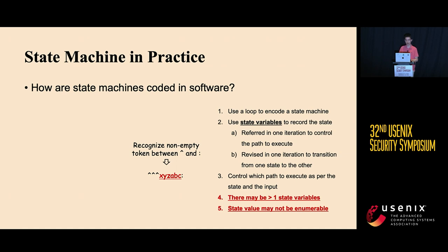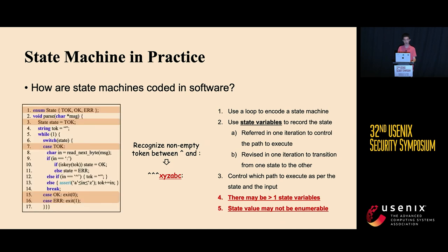Let's use a more complex example to illustrate the challenges. Suppose we want to recognize a non-empty token between the character symbol and the colon symbol. For example, the token we want to recognize is X, Y, Z, A, B, C. We show one possible implementation with two state variables, one of which is string type, meaning it does not have enumerable values.